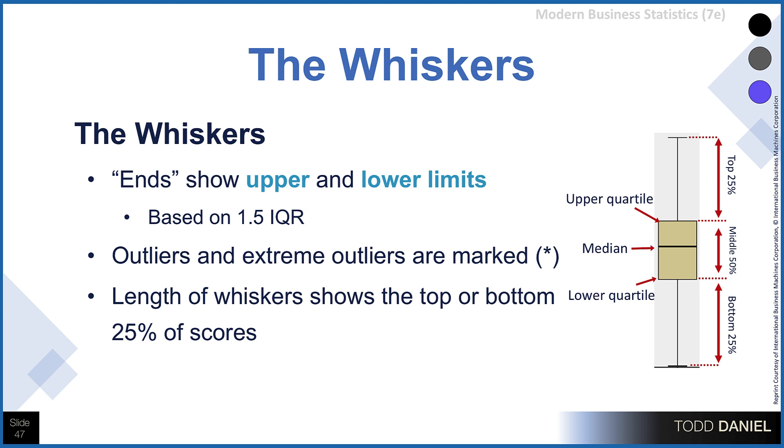What about the whiskers? The whiskers, or the ends, show the upper and lower limits. This is based on 1.5 times the interquartile range. This is what allows us to find our outliers. The outliers, or the extreme scores, are typically marked either with an asterisk or a number indicating the case number for that outlier. And the length of the whiskers shows the top, or the bottom, 25% of the scores.